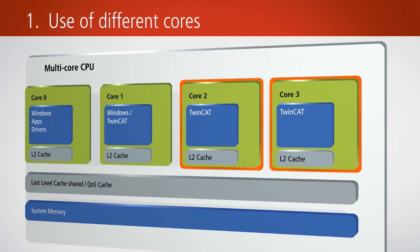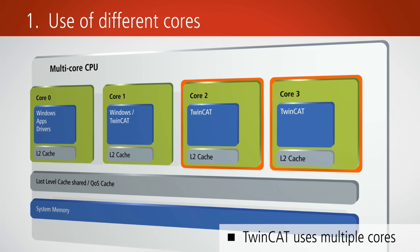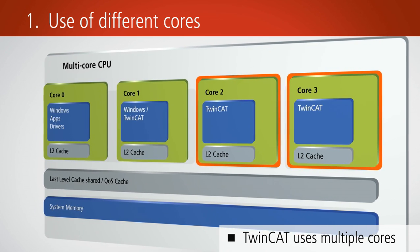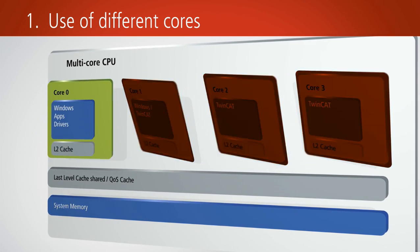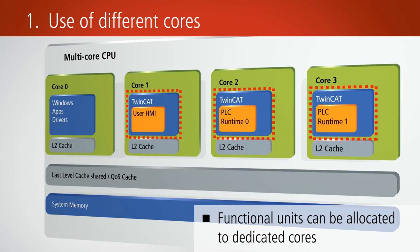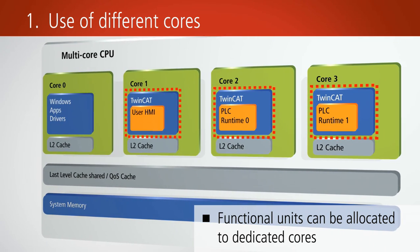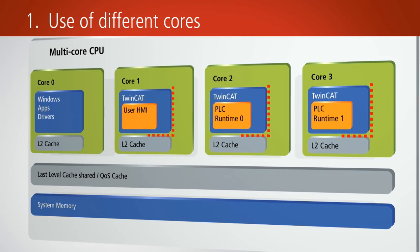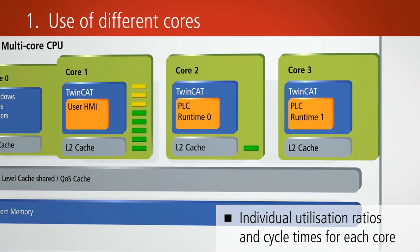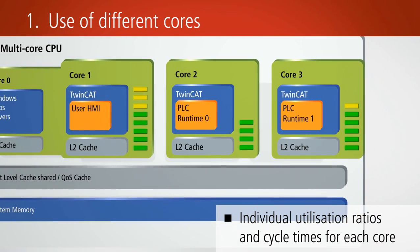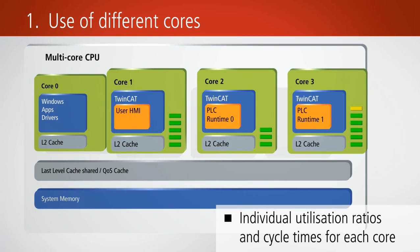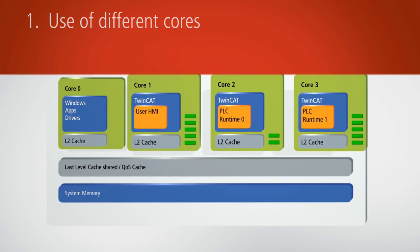TwinCAT supports the use of multiple cores. This means, for example, that the PLC runtime, motion control and the user interface can be distributed to different cores. In doing so, the individual utilisation ratio of each core can be specified separately. Tasks can be assigned to the cores with individual cycle times.